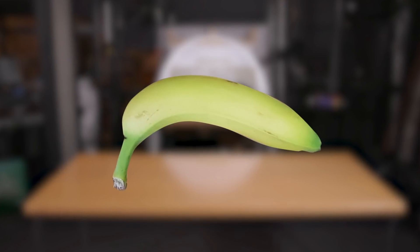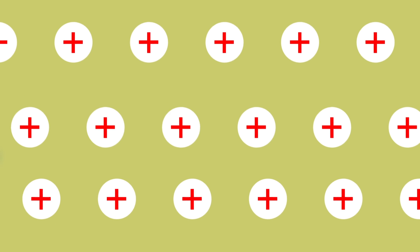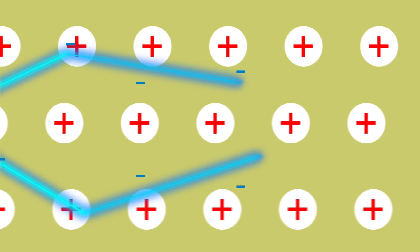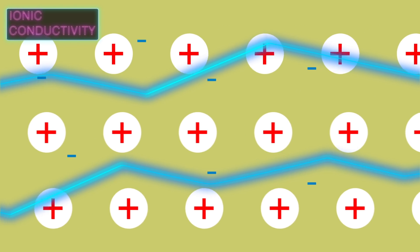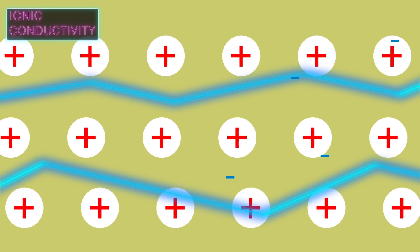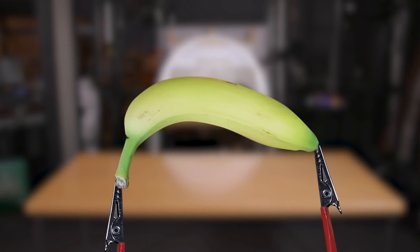Bananas work nicely as keys because inside the fruit's juices contain positively charged free-floating potassium ions. When you add a negatively charged current to these ions, they are able to flow freely and carry the current without too much resistance.